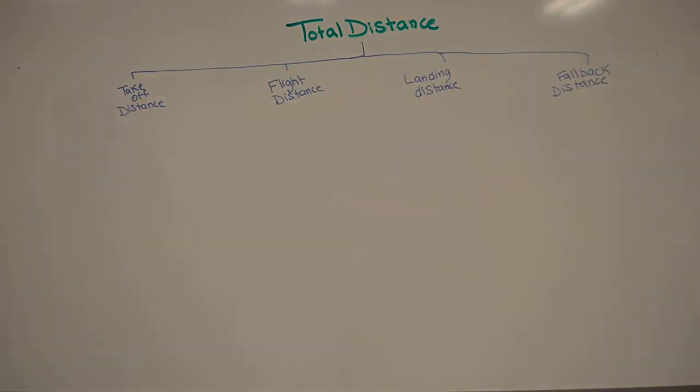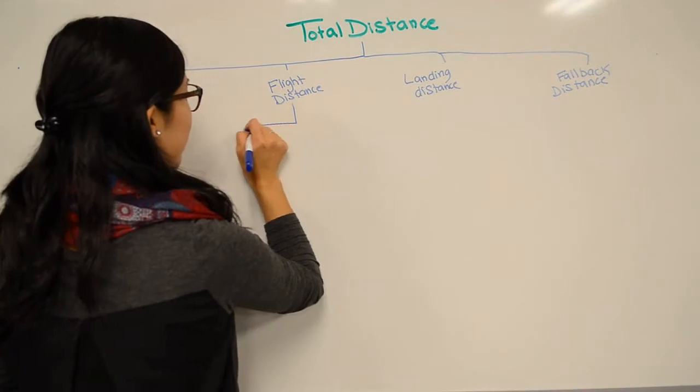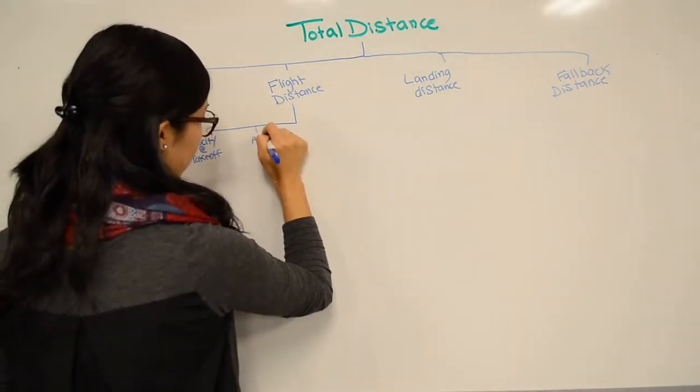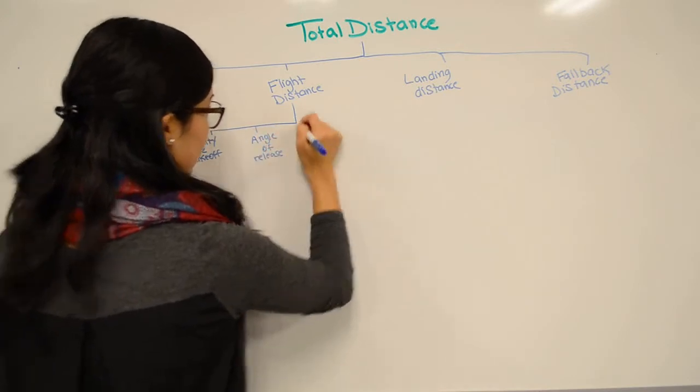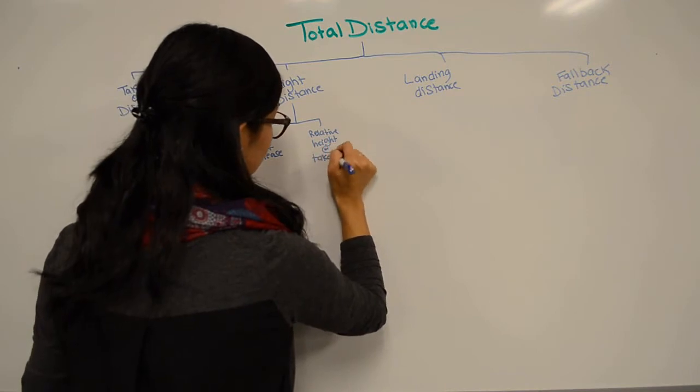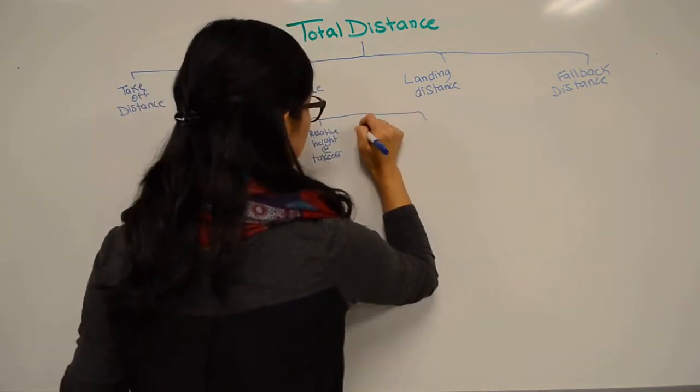If we examine the distances, we can see that there is a flight distance, which means that there is a condition of projectile motion. That means that we can break this down even further into velocity at takeoff, angle of release, relative height at takeoff, air resistance, and acceleration due to gravity.